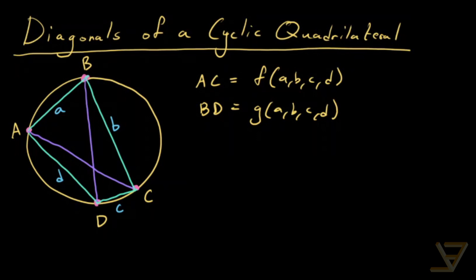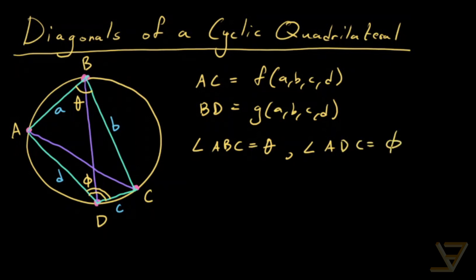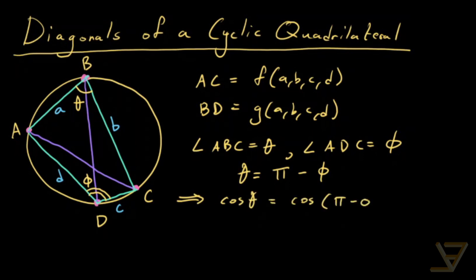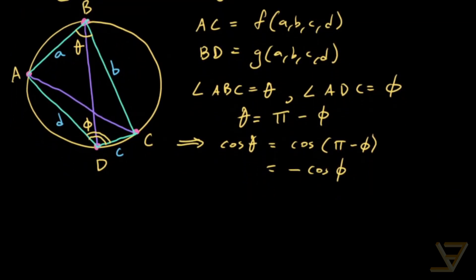The main idea is that opposite interior angles of a cyclic quadrilateral are supplementary. Let's call angle ABC equal to θ and angle ADC equal to φ, so θ = π − φ. This implies that cos θ = cos(π − φ), which by trigonometric identities equals −cos φ.